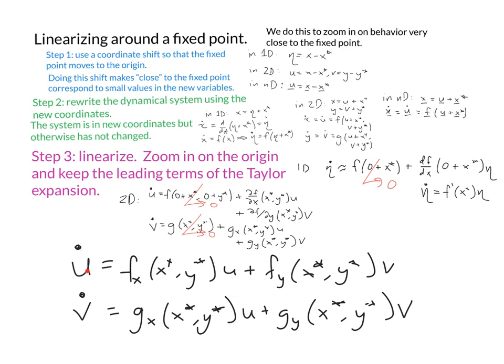So we have u̇ = f_x·u + f_y·v and v̇ = g_x·u + g_y·v, and we can rewrite this in matrix form.